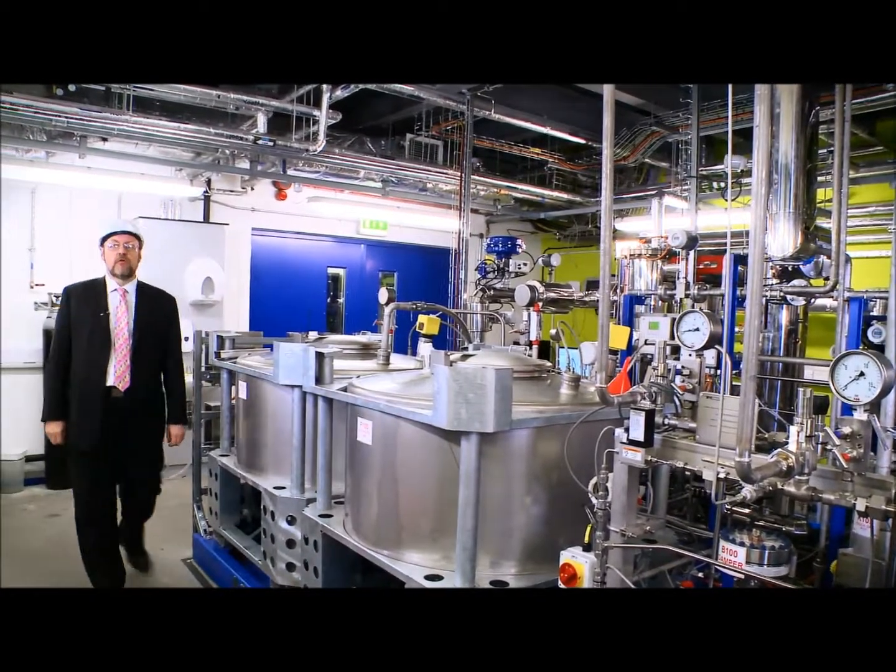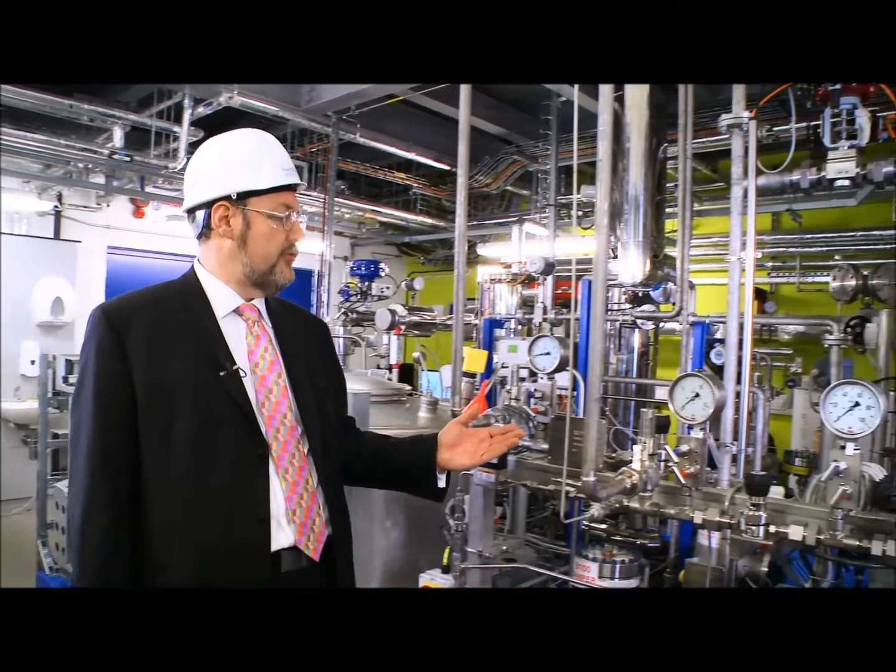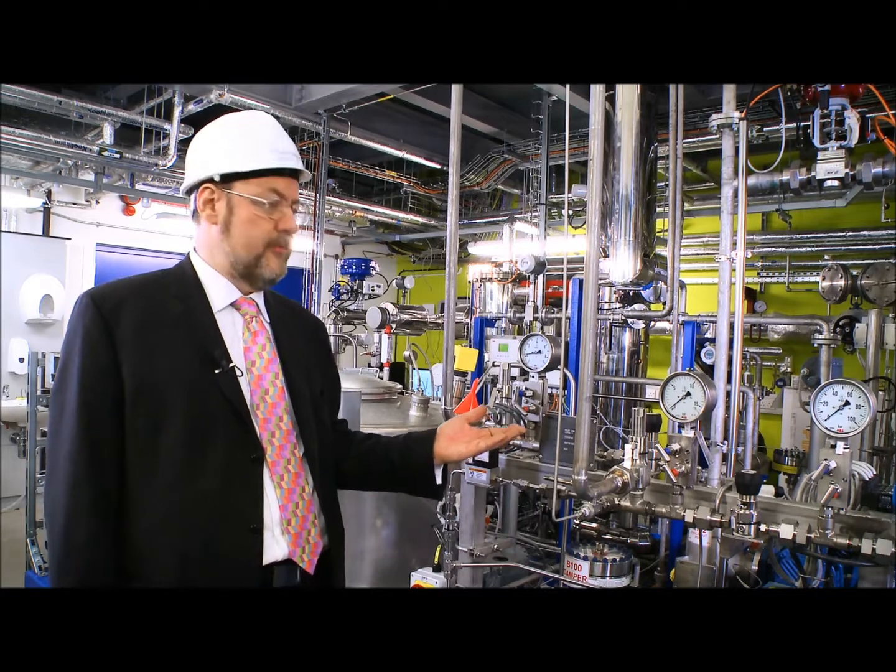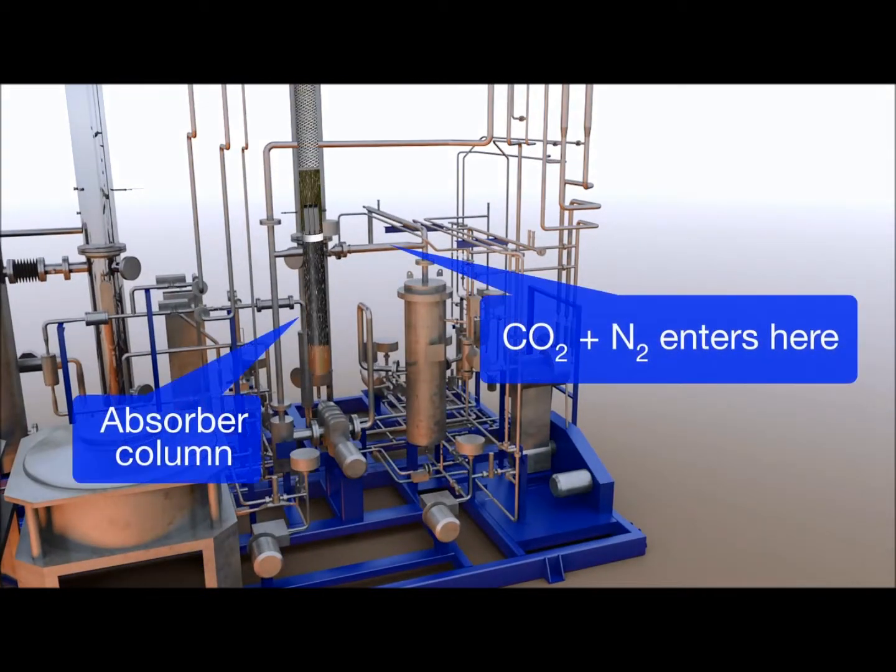Here we are on the ground floor of the plant and just over here on my left is where we mix the CO2 and nitrogen which is used to make up the flue gas that we're going to be using in our plant. It enters the right-hand absorber column here and begins to rise up from the bottom.